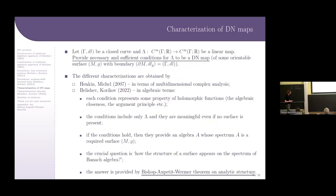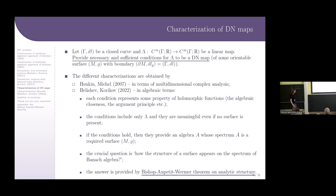The next question is a characterization of DN maps. Suppose that lambda is a linear operator acting on smooth functions on the closed curve gamma. The question is: is lambda a DN map of some orientable surface with boundary gamma? To give a characterization is to provide necessary and sufficient conditions for this. One form of such conditions was obtained by Henkin and Michel in terms of multidimensional complex analysis. In our work we provide another set of necessary and sufficient conditions in algebraic terms.